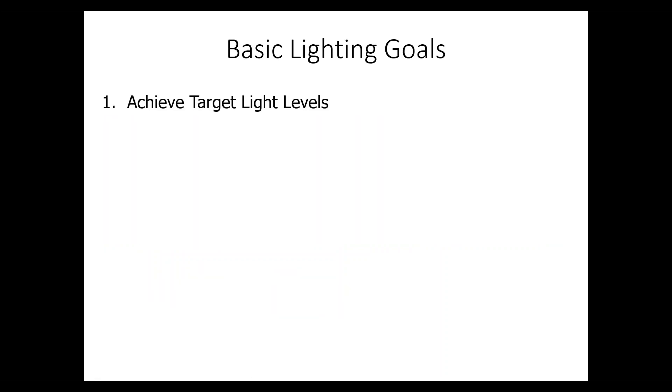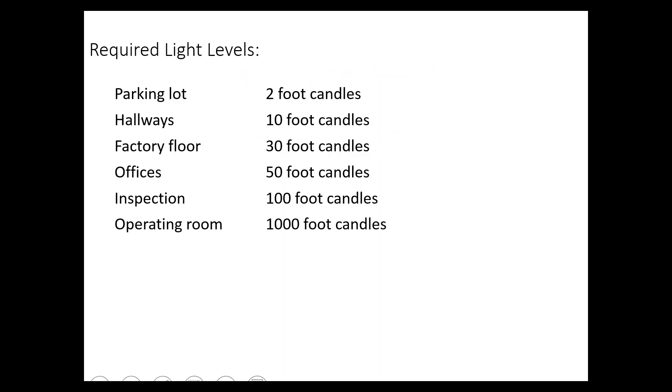So, let's try to pull all this information together and establish some basic lighting goals. One of the things you want to do in any lighting retrofit is to understand the target light levels. And these come from an organization called the Illuminating Engineering Society, IES. They publish what's required in different environments. For example, in a parking lot, you're only required to have one to three foot candles, just say two. And these are just rough numbers. On a factory floor or aisleway, 30 foot candles. And this is a measurement in the United States.